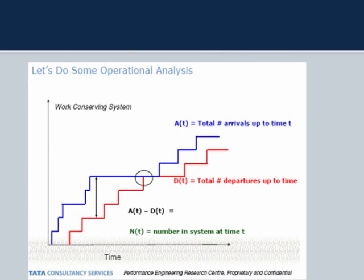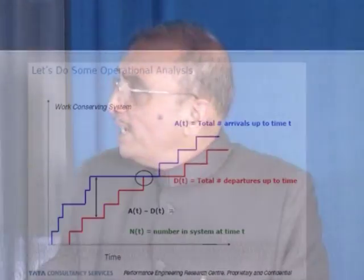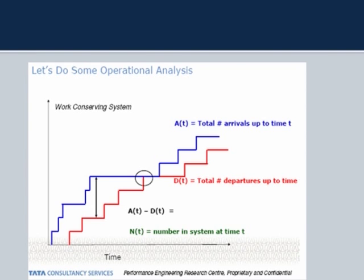Now for some elegant theory. We look at what is called a work-conserving system and perform operational analysis. The blue line indicates arrival of jobs; a job arrives, is served over some service time, then departs. Sometimes jobs complete slowly, sometimes they arrive faster. There could be a time when a job has just departed and no new one has arrived yet.